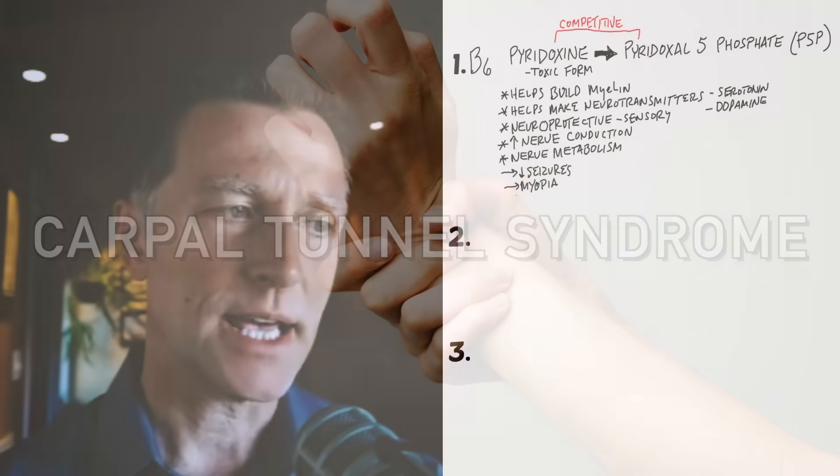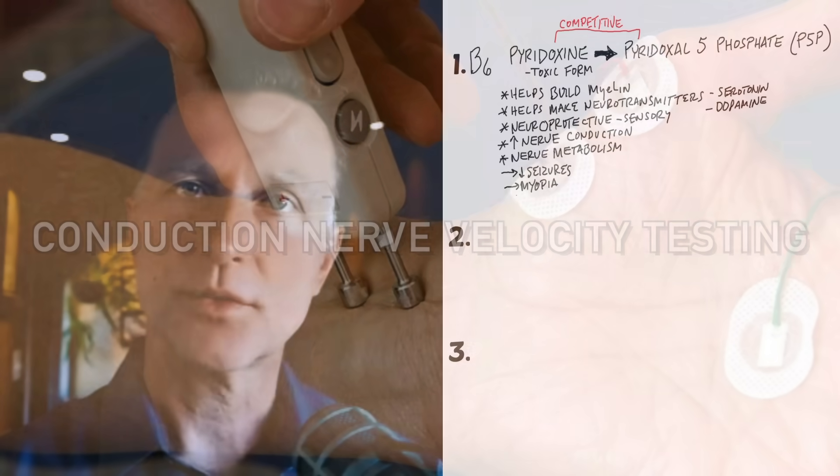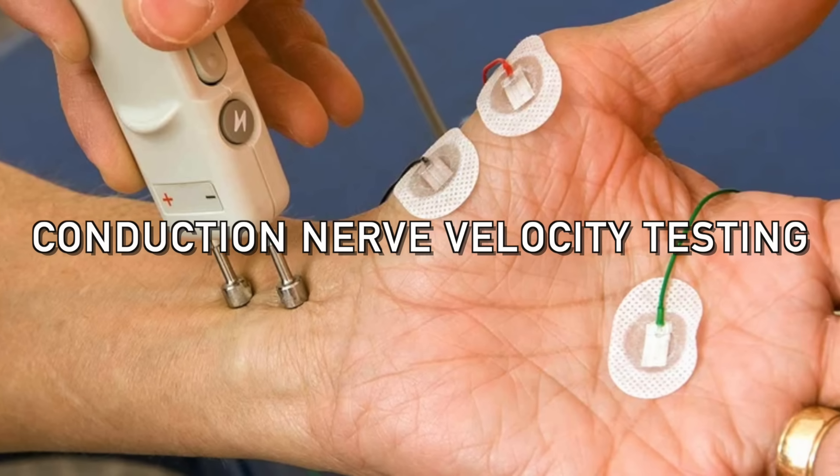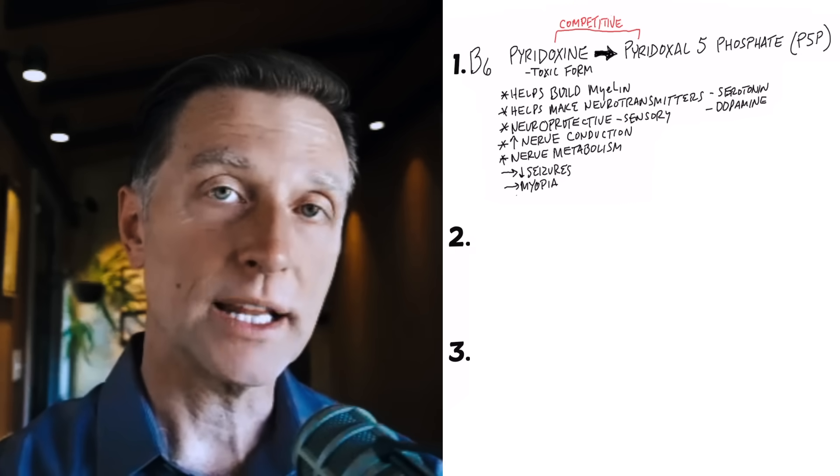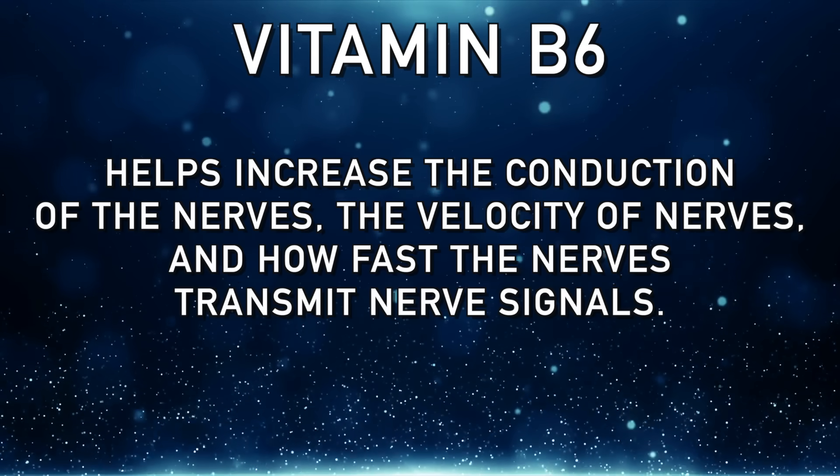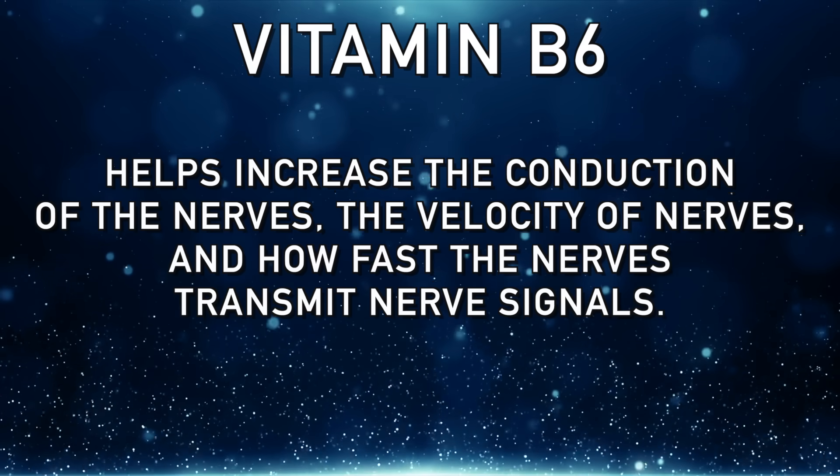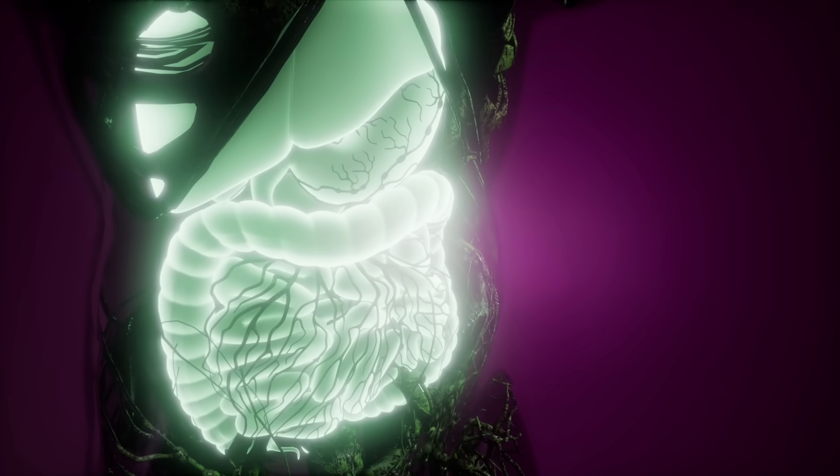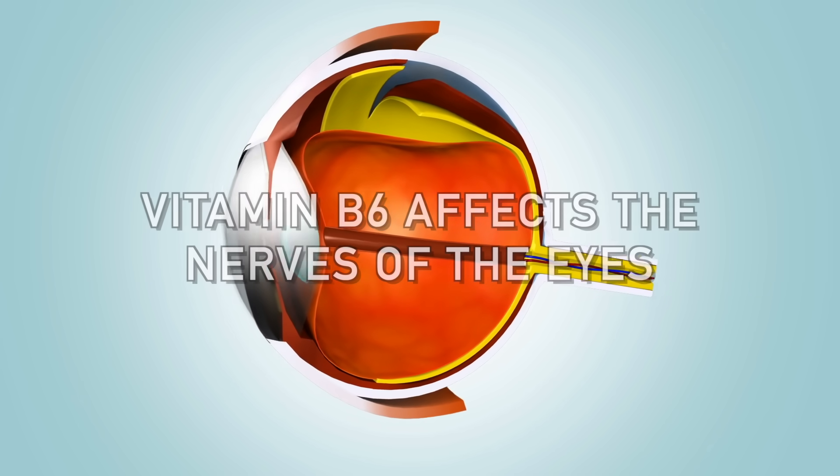So I remember in practice, I had a machine that measured how fast the sensory nerves traveled through your arms. It's called conduction nerve velocity testing, and we would check these sensory nerves. And unfortunately, back then, I had no clue about B6 and other vitamins and how they can greatly affect the nerves. So B6 helps increase the conduction of the nerves, the velocity of nerves, how fast the nerves transmit nerve signals. B6 is also involved in the metabolism of the nervous system as well. And B6 can also affect the nerves of the eyes.